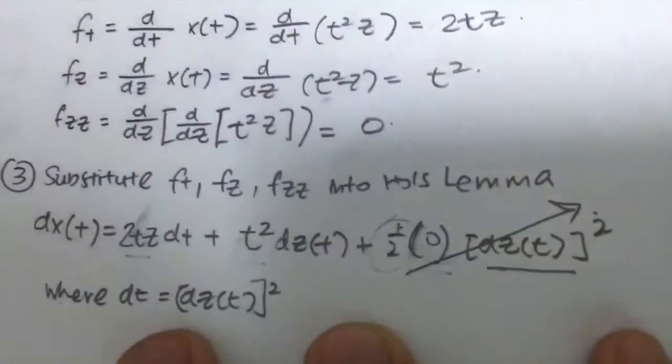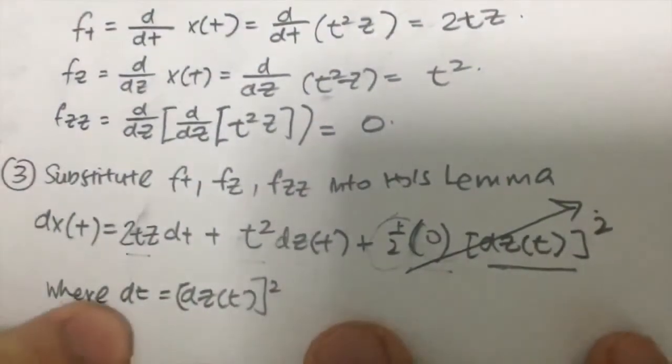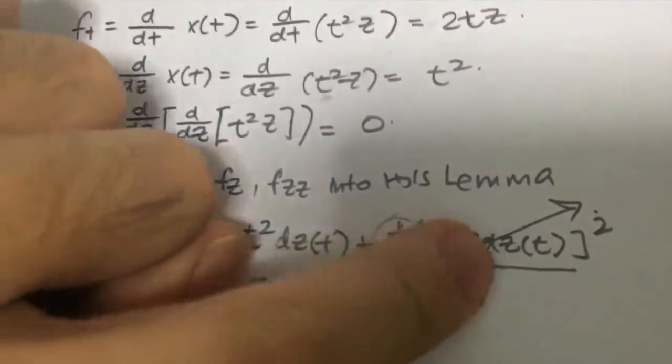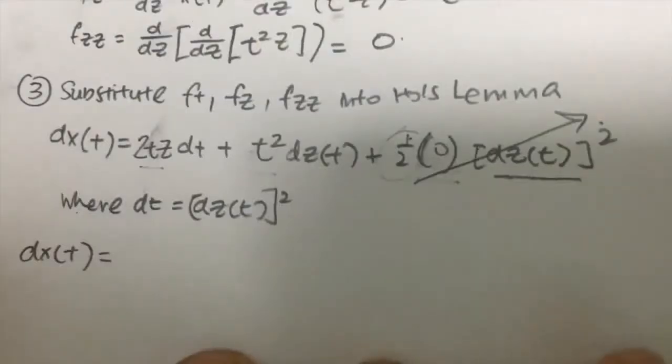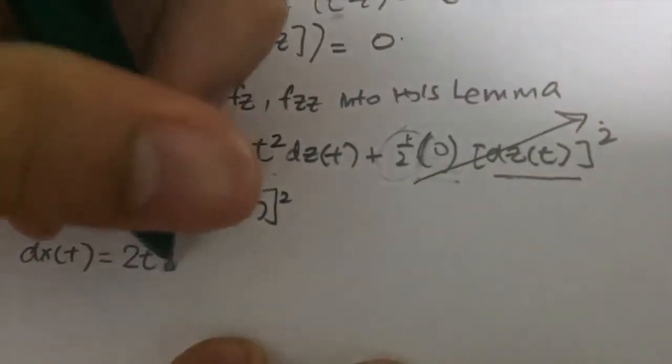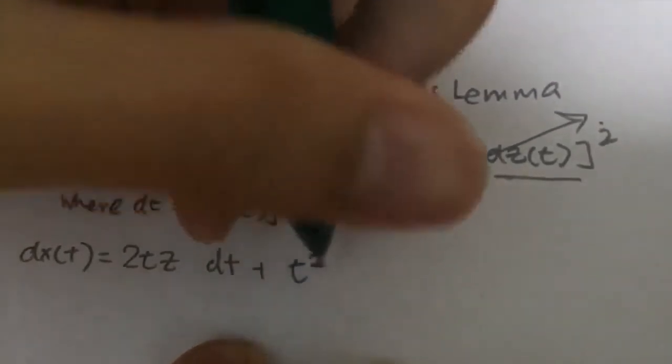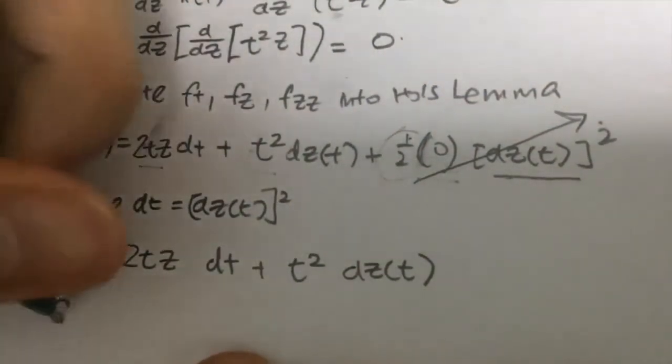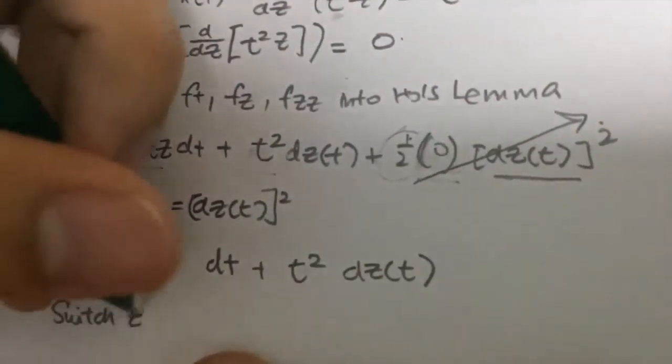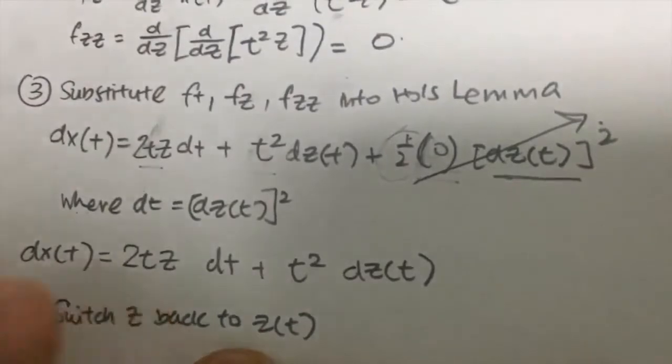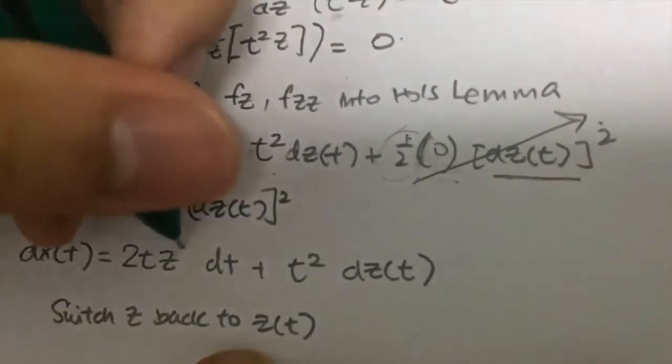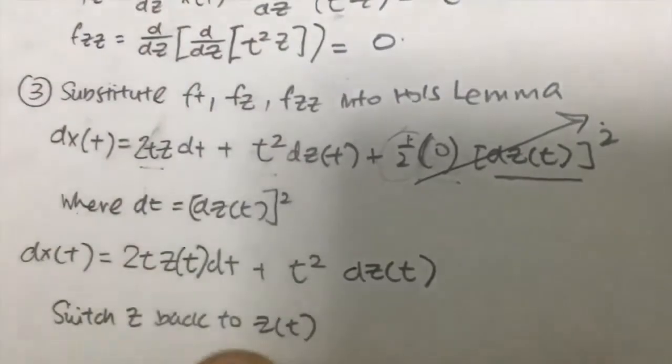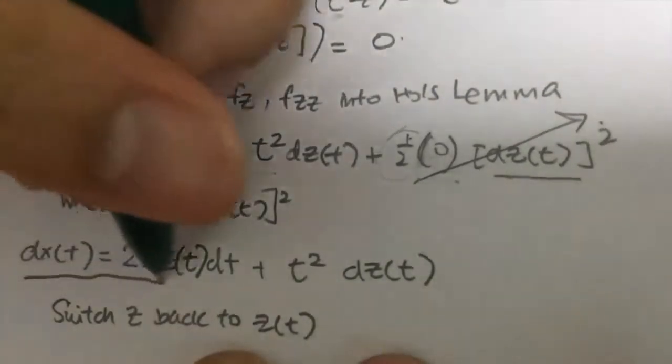So of course this term will be canceled, so we do not need to sub in our dt equals [dz(t)]^2 into this because it doesn't matter. So if I were to rewrite the whole thing, this will be dx(t) which equals 2tZ dt plus t squared dz(t). And of course, last but not least, always switch your Z back to Z(t). So in this case my Z becomes my Z(t). So this is the final answer for the question.